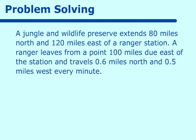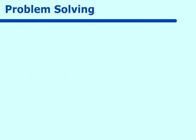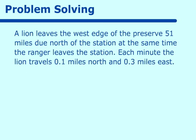Six tenths of a mile north, five tenths of a mile west every minute. A lion leaves the west edge of the preserve 51 miles due north of the station at the same time the ranger leaves that station. Each minute the lion travels 0.1 miles north and 0.3 miles east.